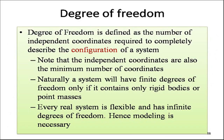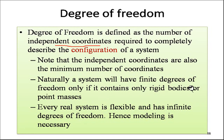Degree of freedom is defined as the number of independent coordinates required to completely describe the configuration of a system. These are the minimum number of coordinates needed. A system has finite degrees of freedom only if it contains rigid bodies or point masses. Every real system is flexible and has infinite degrees of freedom, so modeling is necessary to reduce it to a manageable finite number of degrees of freedom.